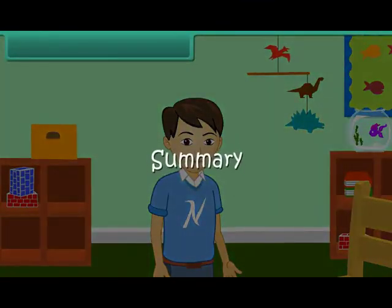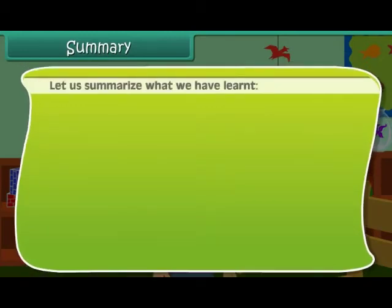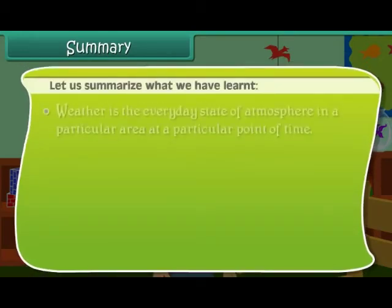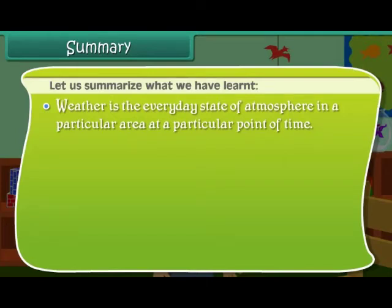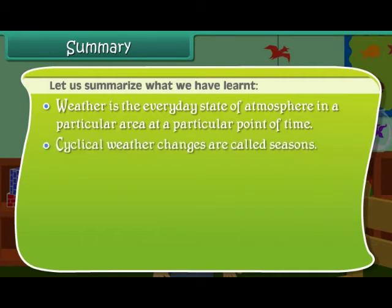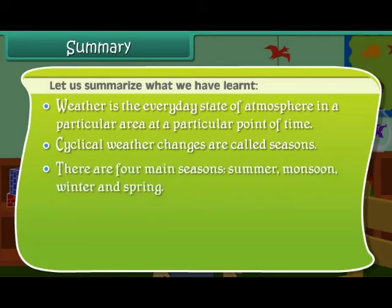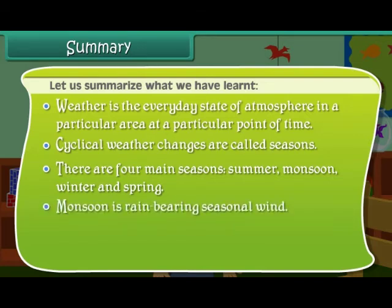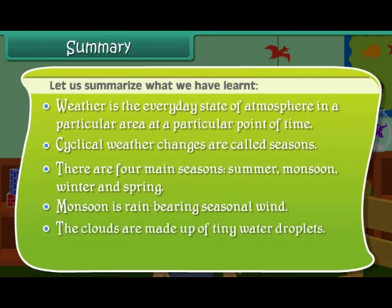Let us summarize what we have learned. Weather is the everyday state of atmosphere in a particular area at a particular point of time. Cyclical weather changes are called seasons. There are four main seasons: summer, monsoon, winter and spring. Monsoon is a rain-bearing seasonal wind. Clouds are made up of tiny water droplets.